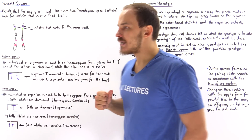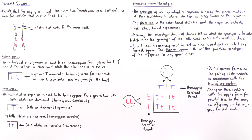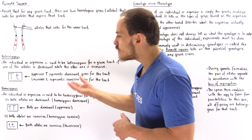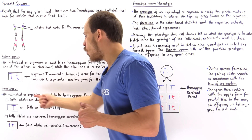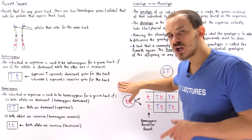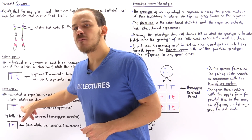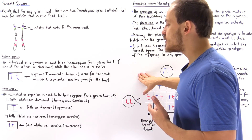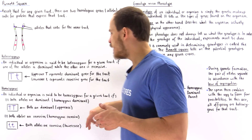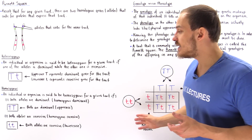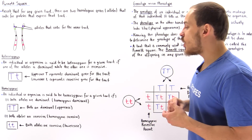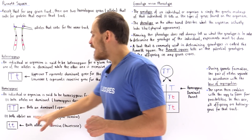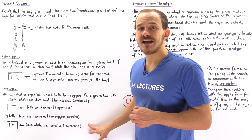What does it mean for an organism to be homozygous for a given trait? There are two possibilities. An organism is homozygous dominant when both alleles are dominant — written as TT — or homozygous recessive when both alleles are recessive — written as tt. These are the two genotypes for homozygous individuals.